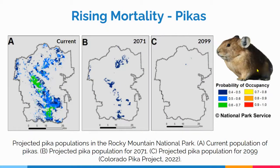Normally, pikas rely on insulation from heavy winter snow packs to keep their dens warm. However, due to global warming, there has been less snowfall, leaving pikas exposed to cold temperatures, resulting in mortality. The current pika population in Rocky Mountain National Park is shown here, and by 2099 the projected population is almost completely gone.